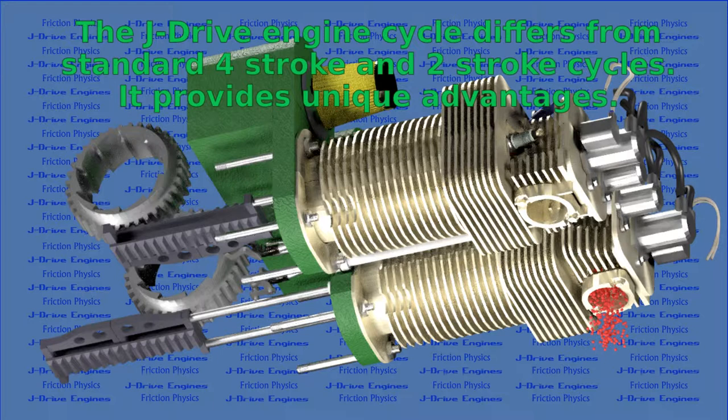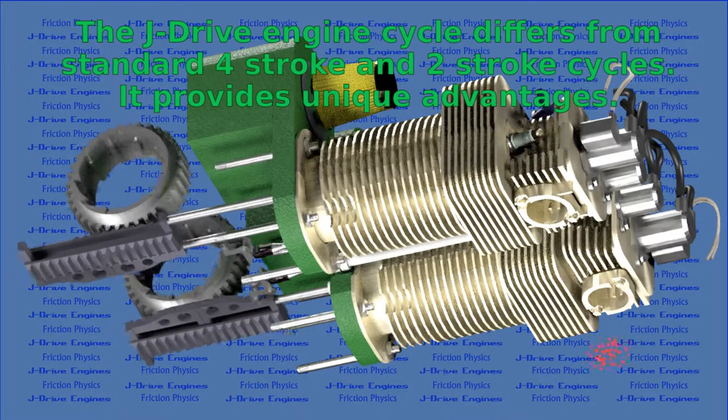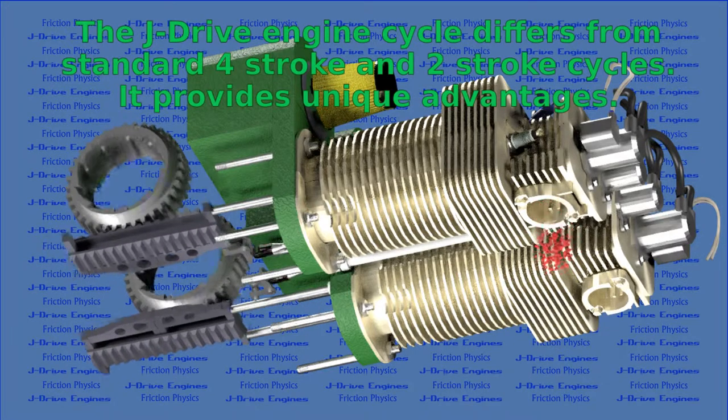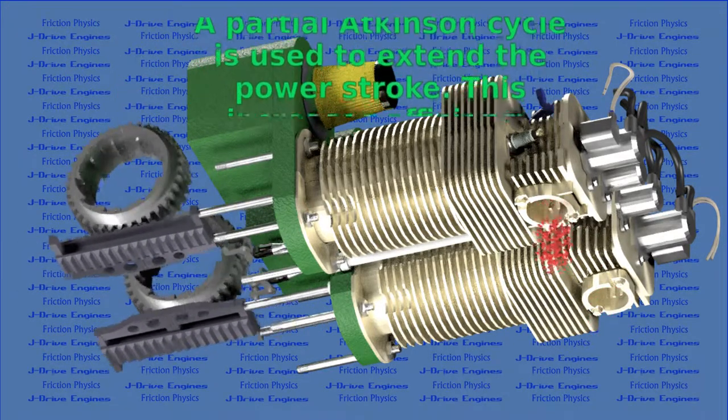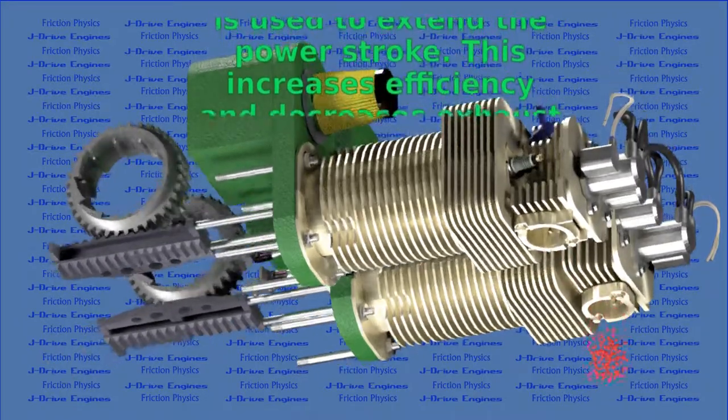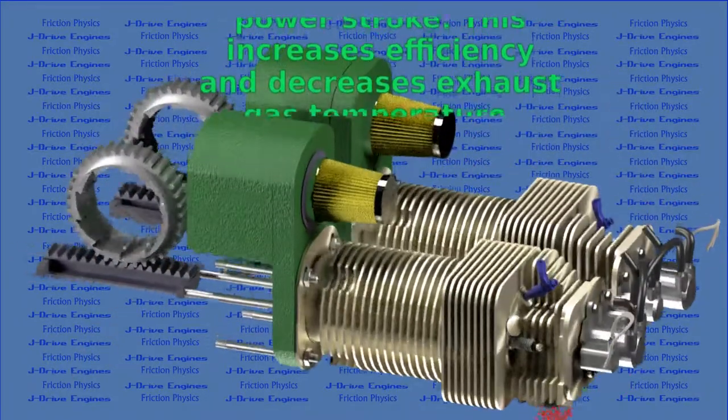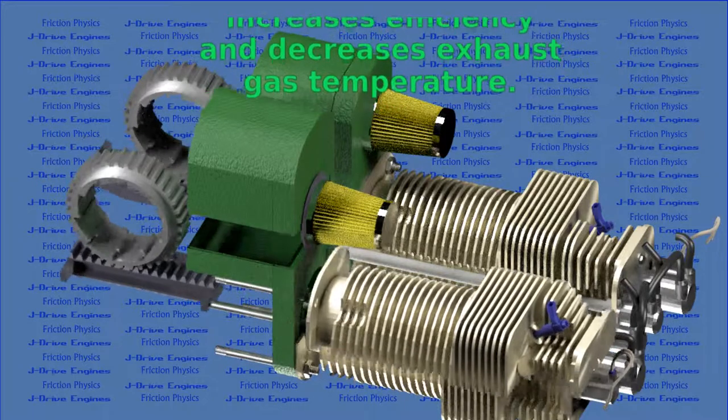The J-Drive engine cycle differs from standard four-stroke and two-stroke cycles. It provides unique advantages. A partial Atkinson cycle is used to extend the power stroke. This increases efficiency and decreases exhaust gas temperature.